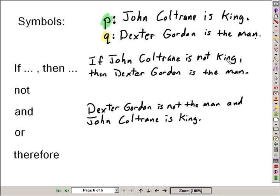If John Coltrane is not king, then Dexter Gordon is the man. Notice the if then, in which case we'll use the arrow symbol. John Coltrane is not king, of course that's P, but the opposite of tilde P. Dexter Gordon is the man is represented by the letter Q.